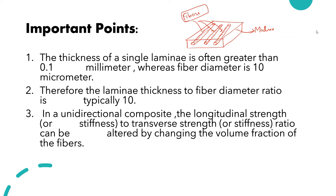The thickness of a single lamina is often greater than 0.1 mm, whereas the fiber diameter is approximately 10 micrometers, which means 10 to the power minus 6 meters, or on the order of 10 to the power minus 3 mm. Therefore, the lamina thickness to fiber ratio is typically 10. In a unidirectional composite, the longitudinal strength to transverse strength ratio can be altered by changing the volume fraction of the fibers.